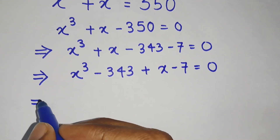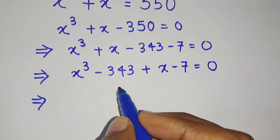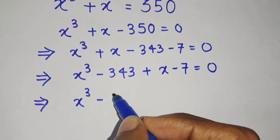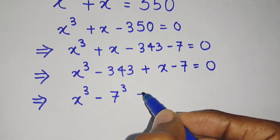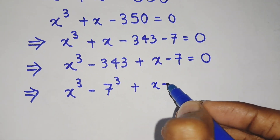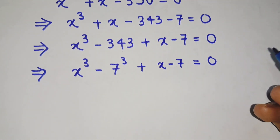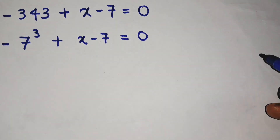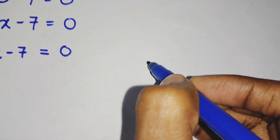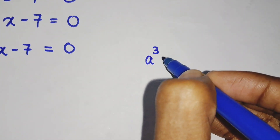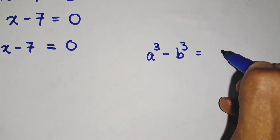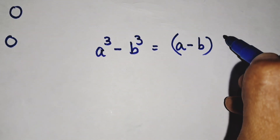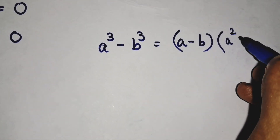We have written this because we can take x cubed minus 343 as x cubed minus 7 cubed, since 343 is nothing but 7 cubed. So the equation becomes x cubed minus 7 cubed plus x minus 7 equals to 0. Now, which formula will we use? We know that a cubed minus b cubed equals to a minus b, into a squared plus ab plus b squared.